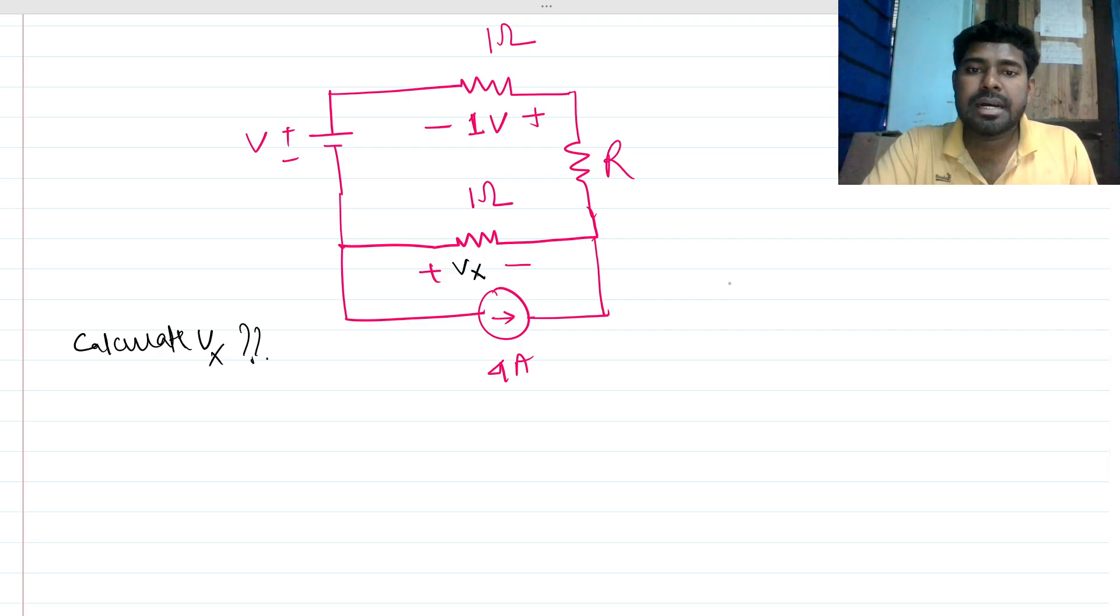We need to find vx, the voltage across this one-ohm resistance. You can do any KCL or KVL things, but it will be messy. I will try to solve by intuition.